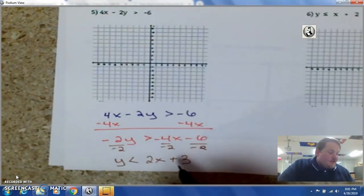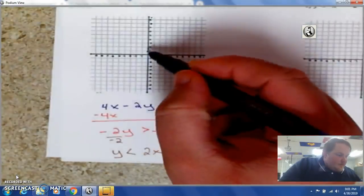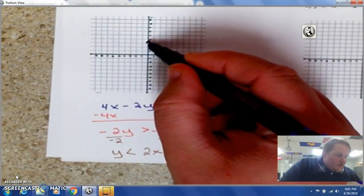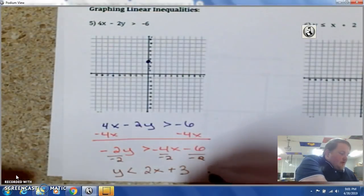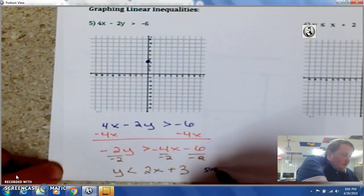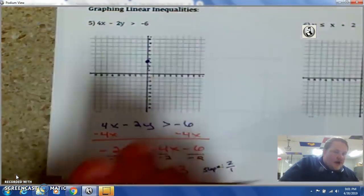So, I go ahead and plot my y-intercept, which is 3. 1, 2, 3. Plot that point. And my slope is 2. So, the slope is 2 over 1. If it's a solid 2, put a 1 underneath. In the positive direction. Remember, Mr. Slopeman.